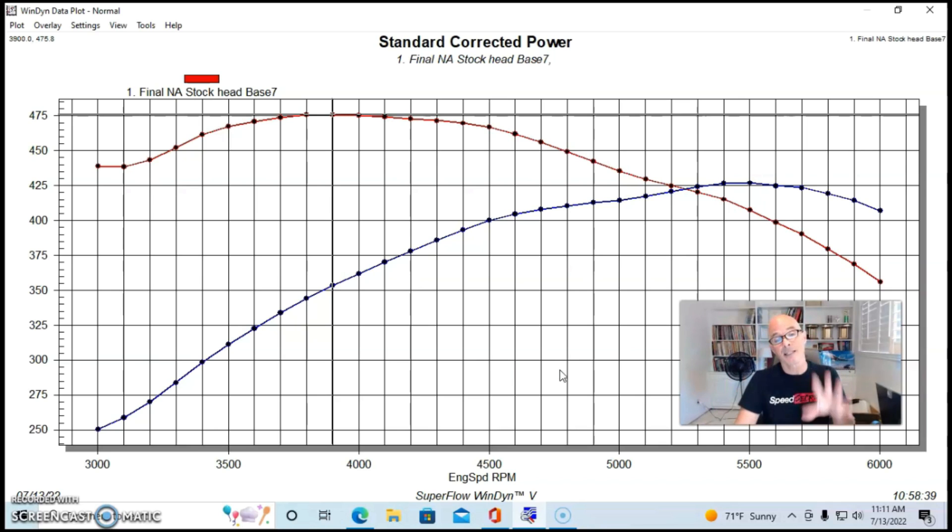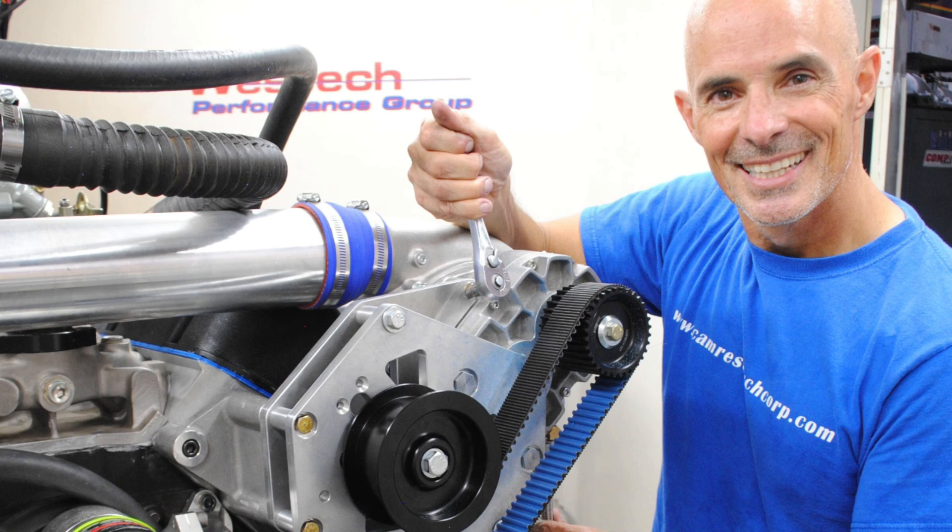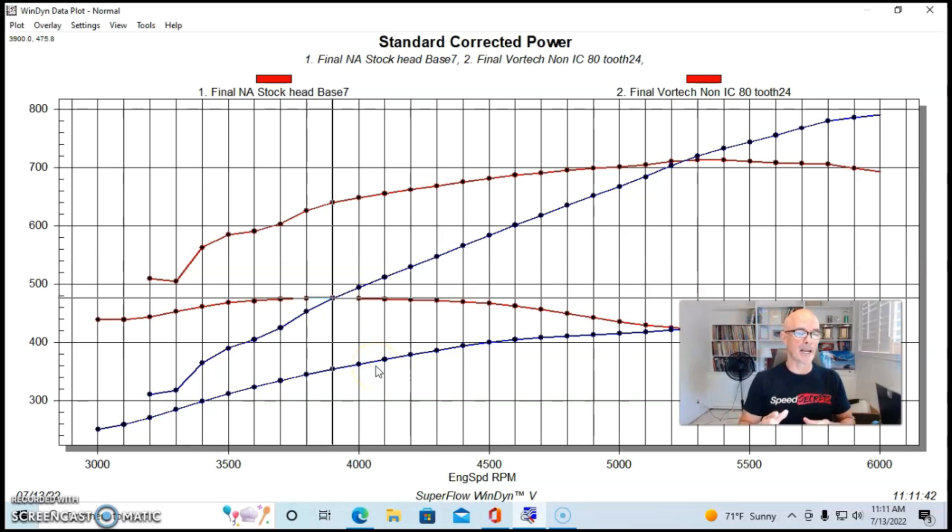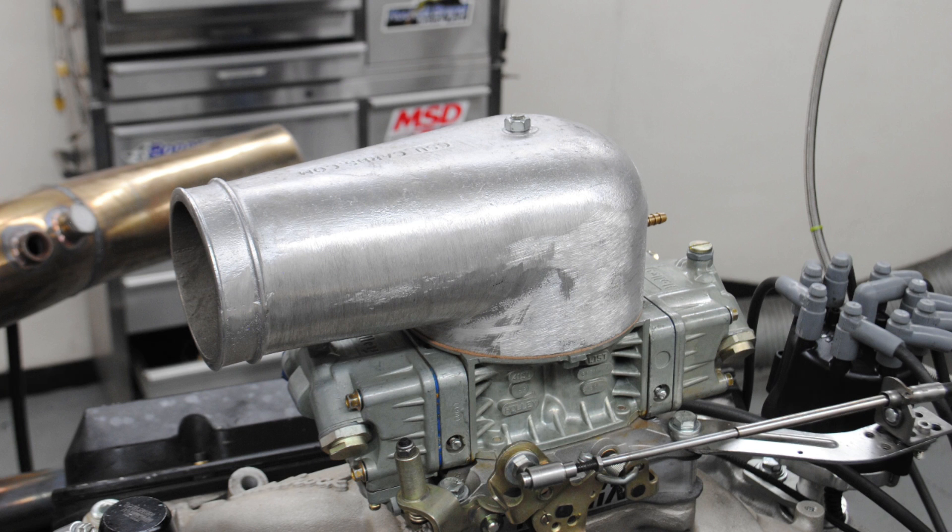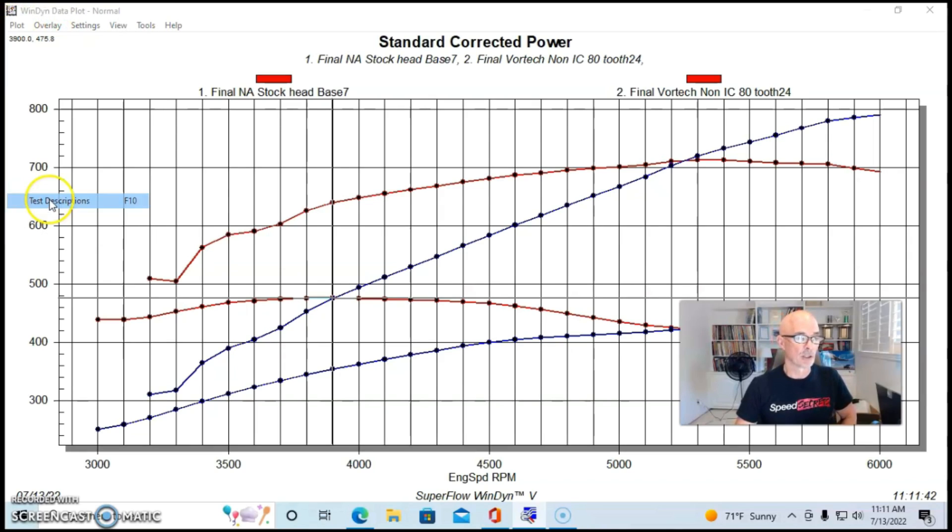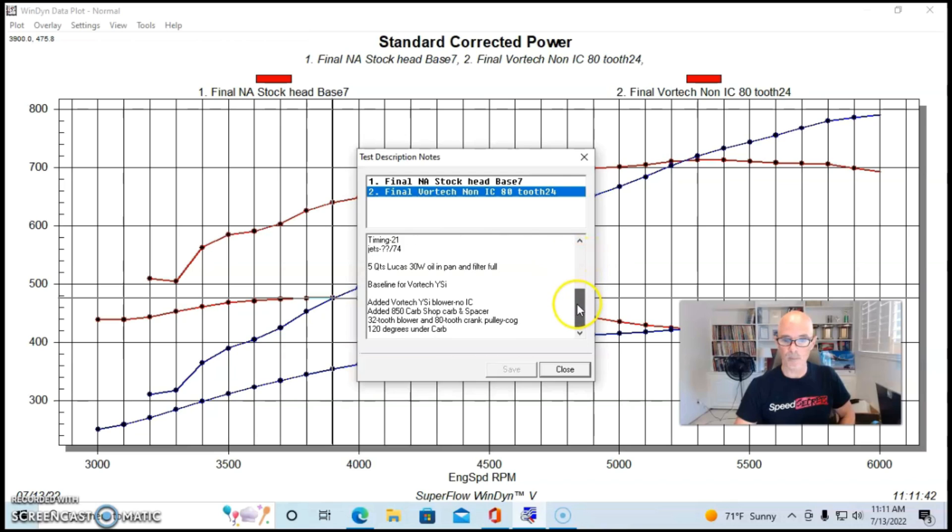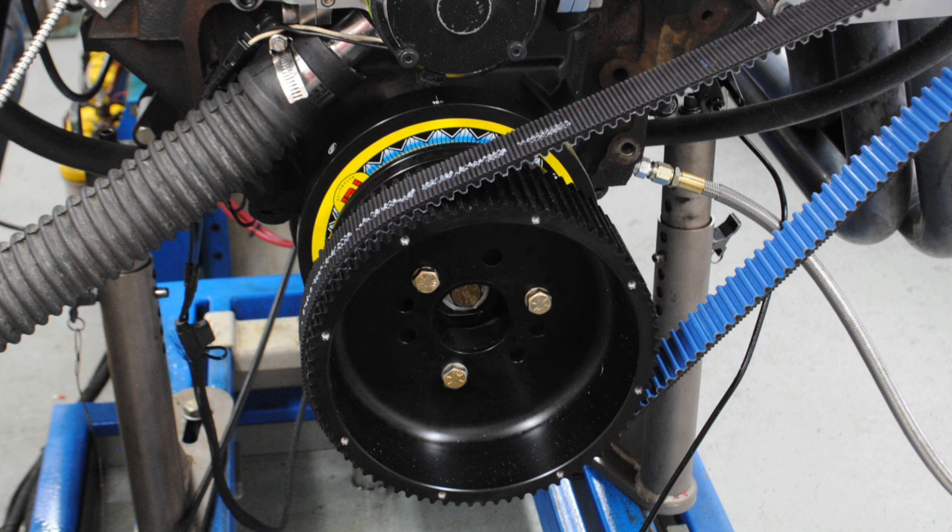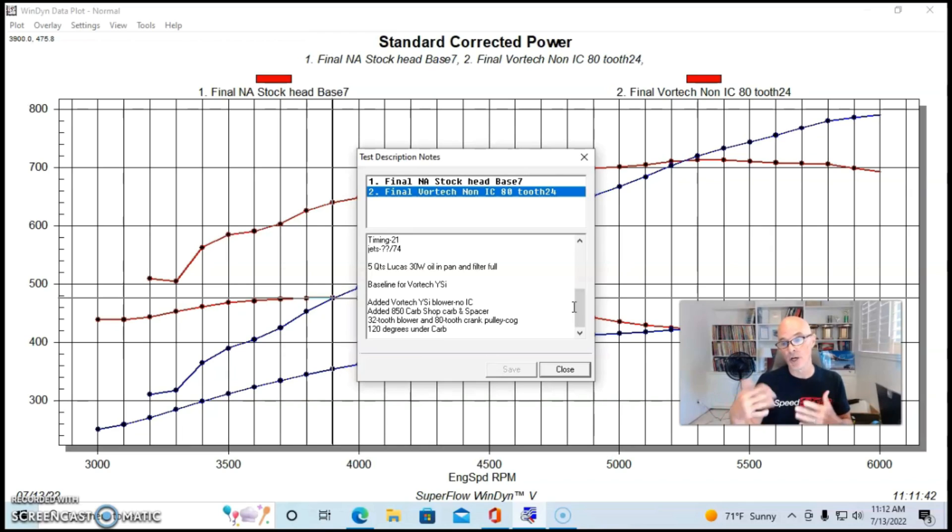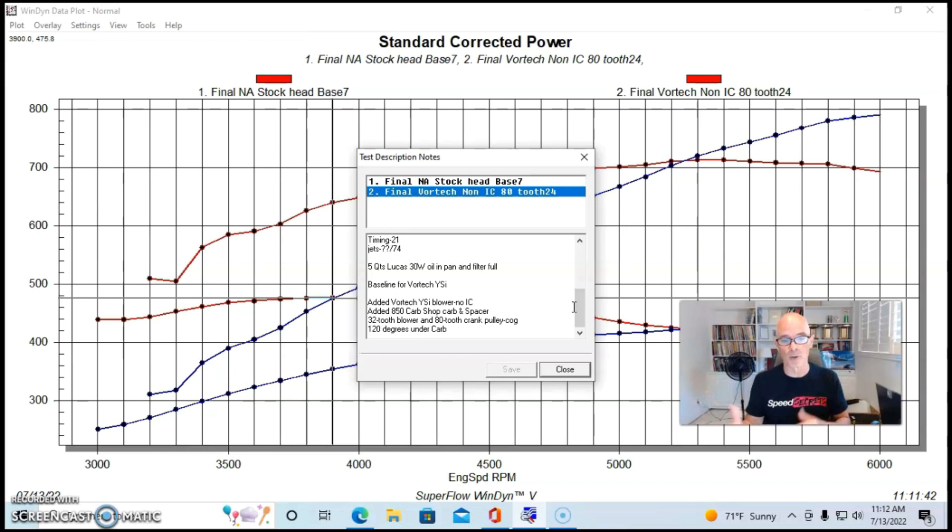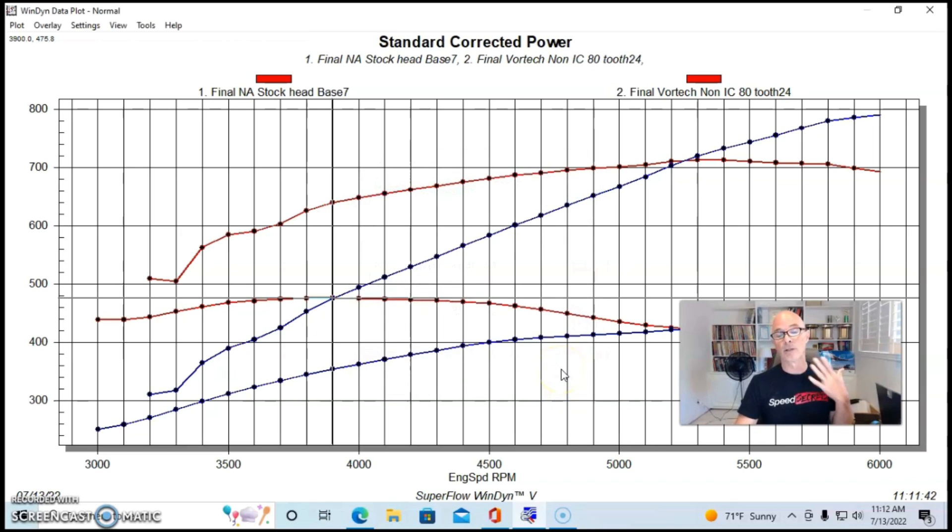Let's talk about boost now. We put on a Vortex supercharger - we ran this thing non-intercooled with a blow-through CSU carburetor. The Vortex was a Vortex YSI capable of supporting over a thousand horsepower. We ran it with a cog pulley, a 32 tooth blower pulley and 80 tooth crank pulley so this thing was spinning pretty well. We actually measured the temperature under the carburetor - it was about 120 degrees because the carburetor itself offers a form of intercooling so it'll lower the charge temperature.